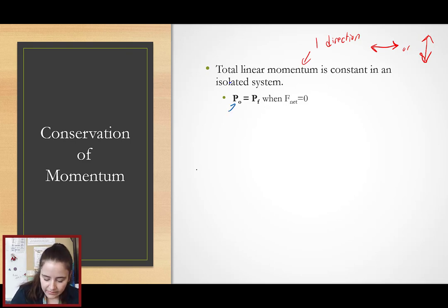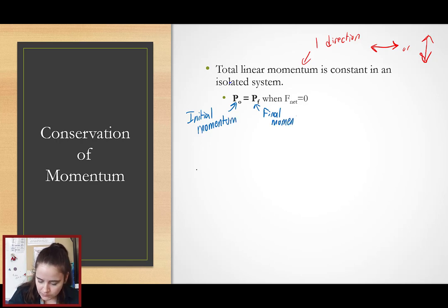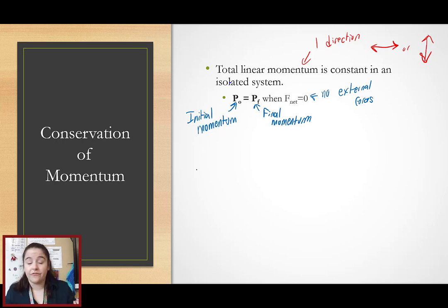What that means is that we have our initial momentum P-naught, which will equal our final momentum, whenever we have no external forces — whenever the only forces involved in the collision are the forces between the two objects colliding.